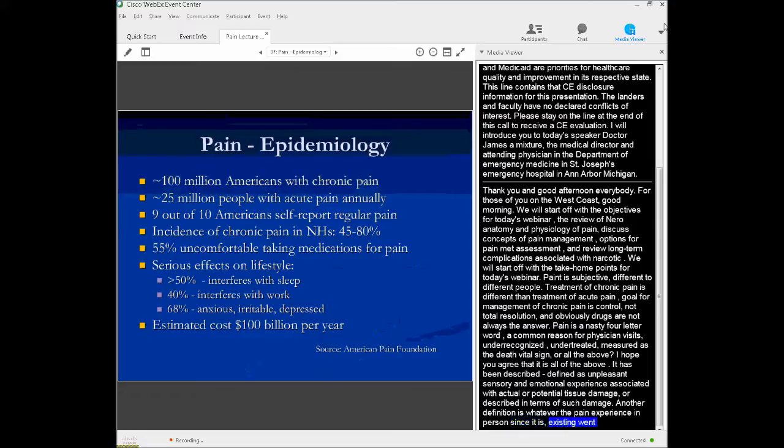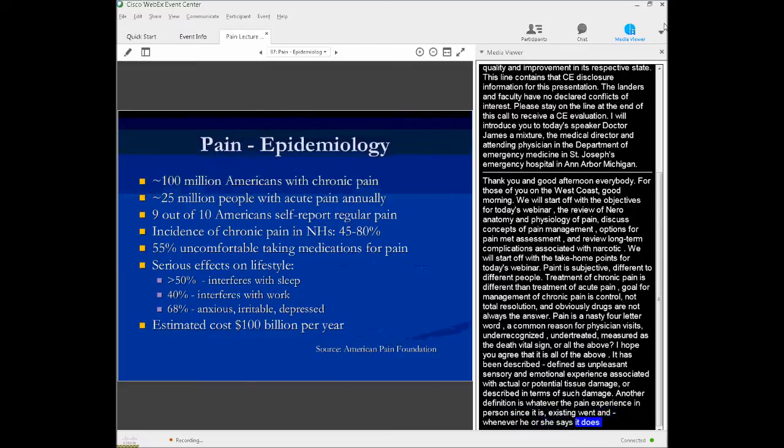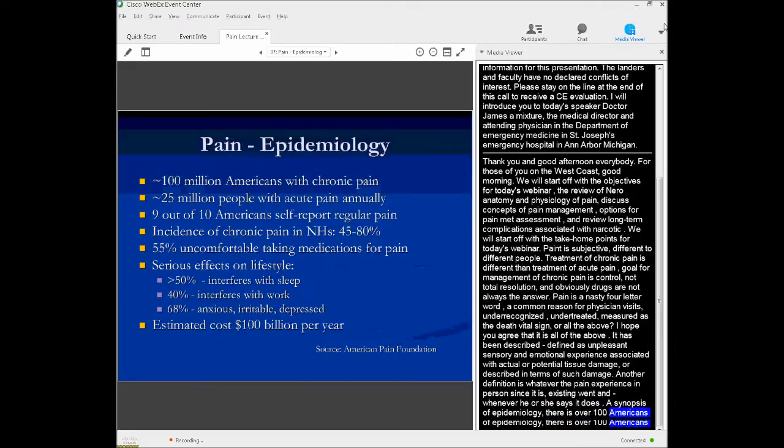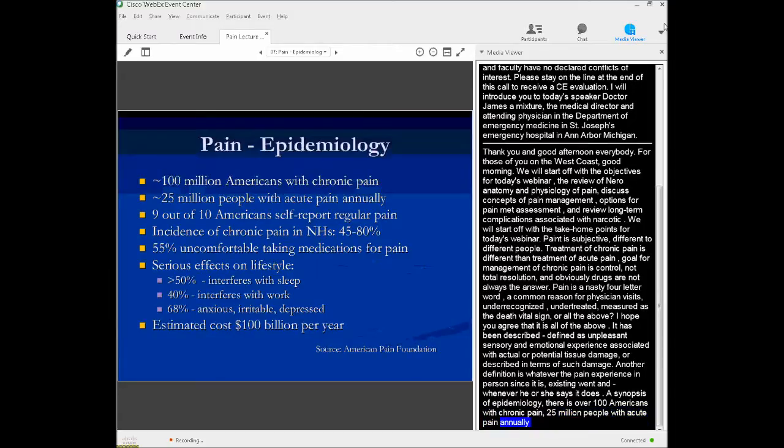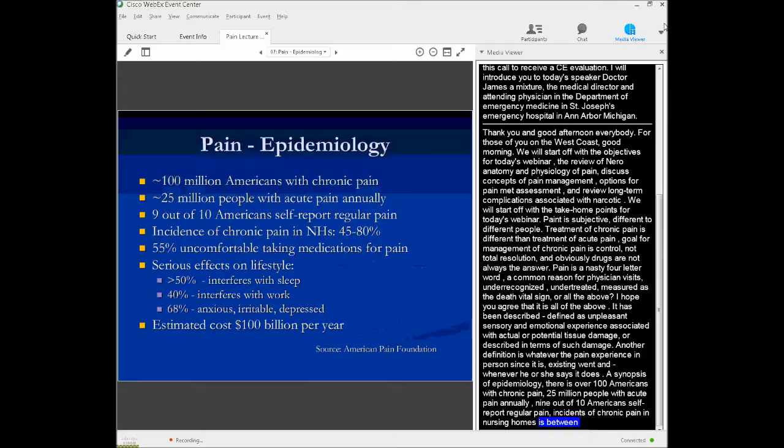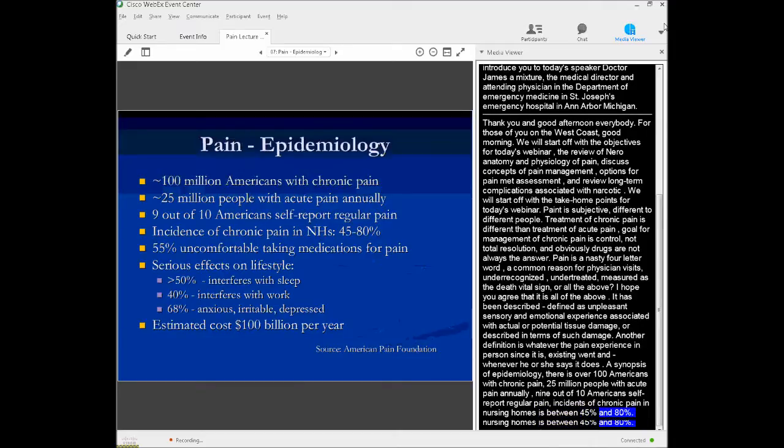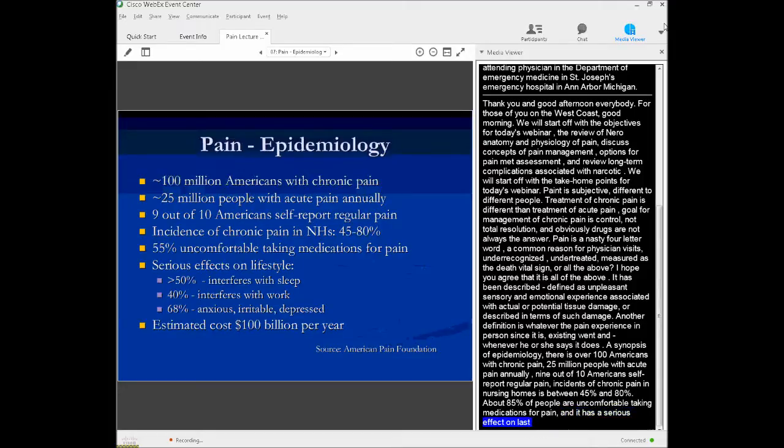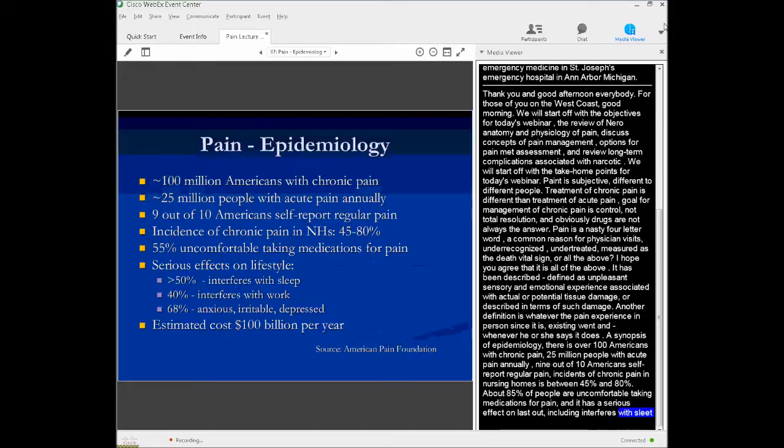So just a brief synopsis of epidemiology. There's at least 100 million Americans who have chronic pain, and about 25 million people with acute pain annually. About 90% of Americans at one time or another will self-report regular pain. Among residents in nursing homes, the incidence of chronic pain is between 45% and 80%. About half of all people feel uncomfortable taking medications for pain, and pain has serious effects on lifestyle, including interference with sleep, with work, and making people anxious, irritable, and depressed. A relatively low-ball estimate of the annual cost in the United States is about $100 billion a year for the diagnosis, management, and treatment of pain.